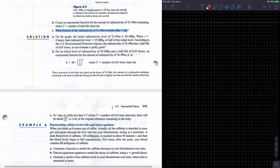Representing caffeine levels with equivalent equations. When you drink an 8 ounce cup of coffee, virtually all the caffeine is absorbed in your gut and passes through the liver and into your bloodstream, acting as a stimulant. A peak blood level of caffeine, 120 milligrams, is reached in about 30 minutes. And then the blood level begins to fall exponentially. Five hours after the peak, your blood contains 60 milligrams of caffeine.